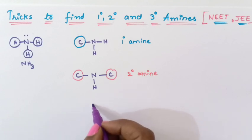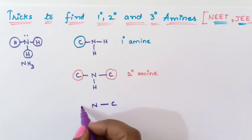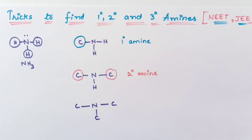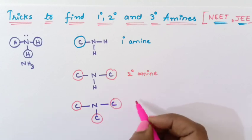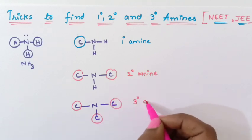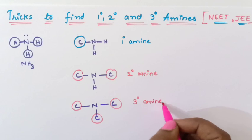So if nitrogen, carbon, carbon, carbon and carbon. So if nitrogen is connected to 3 carbon atoms - 1, 2, 3 - then it is called as tertiary amine. Is that very simple students?